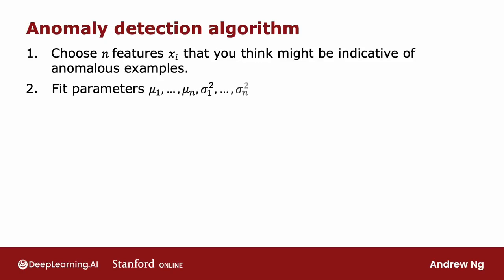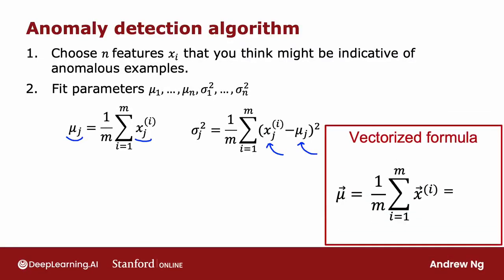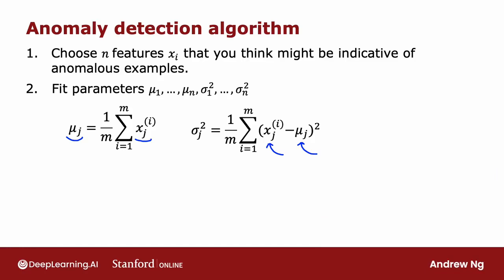Having come up with the features you want to use, you would then fit the parameters μ₁ through μₙ and σ²₁ through σ²ₙ for the n features in your data set. As you might guess, the parameter μⱼ will be just the average of xⱼ of the feature j of all the examples in your training set. And σ²ⱼ will be the average of the square difference between the j feature and the value μⱼ that you just computed. And by the way, if you have a vectorized implementation, you can also compute μ as the average of the training examples as follows, where here x and μ are both vectors. And so this would be the vectorized way of computing μ₁ through μₙ all at the same time. And by estimating these parameters on your unlabeled training set, you've now computed all the parameters of your model.